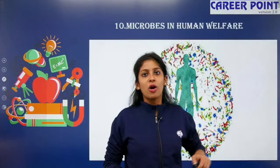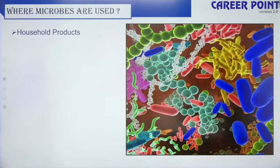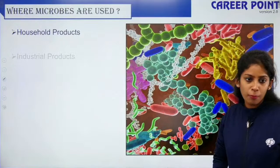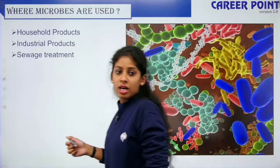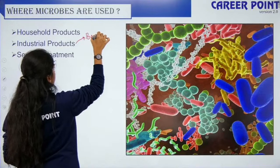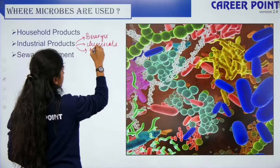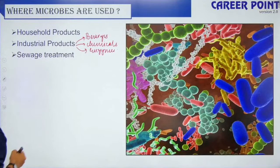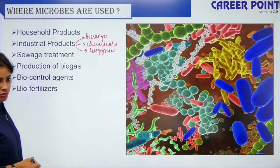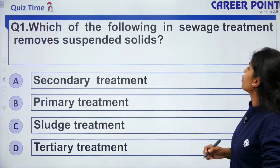Now we move to the next chapter: microbes in human welfare. In this chapter we studied household products, industrial products — microbes used in beverages, production of chemicals, and enzymes — as well as sewage treatment, production of biogas, biocontrol agents, and bio fertilizers.